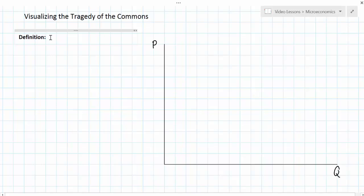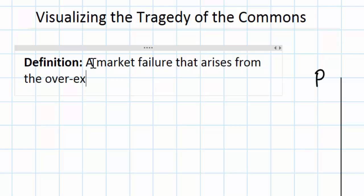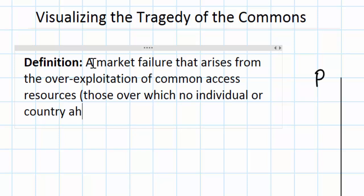In a previous lesson you learned about what the tragedy of the commons is. This is a market failure that arises from the over-exploitation of common access resources. Common access resources are those over which no individual or country has ownership but anyone can use.